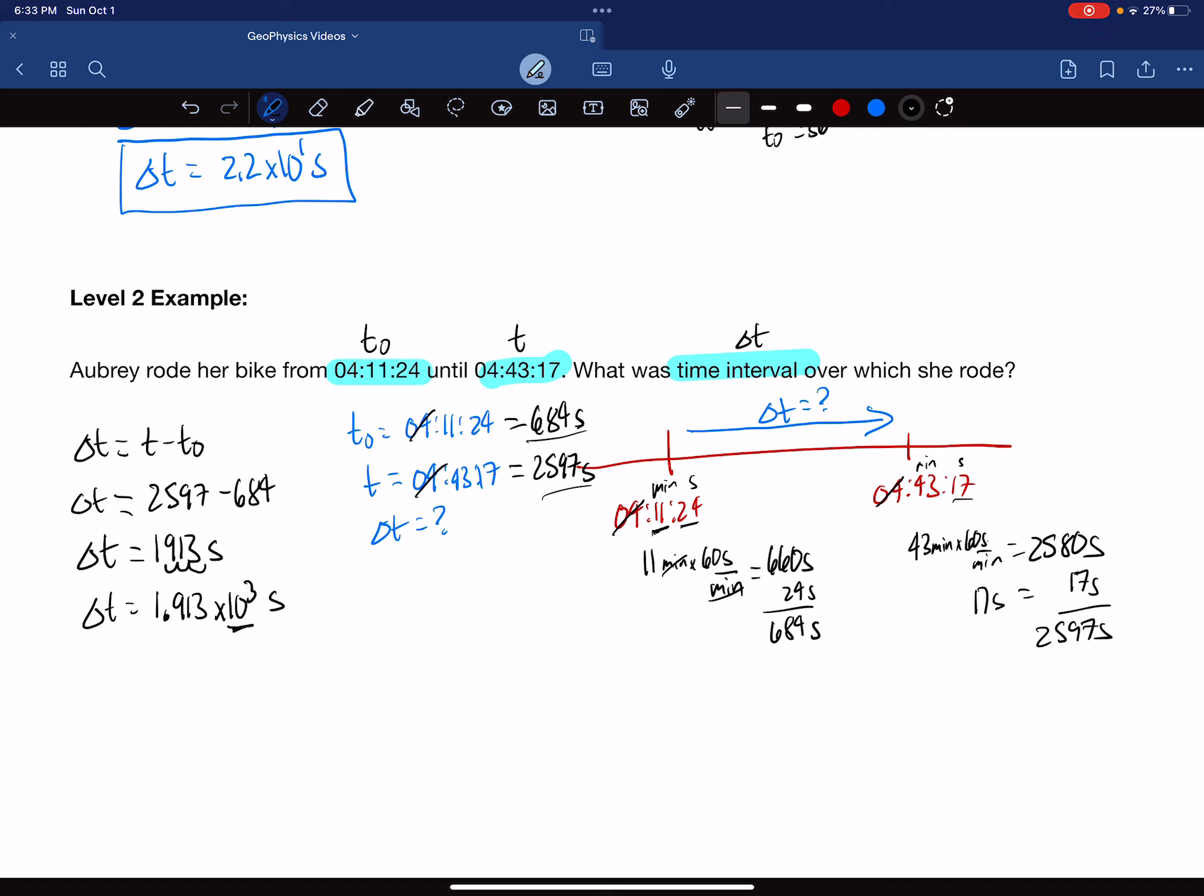You should recognize that 10 to the third is the power of 10 for kilo. So we could write this as 1.913 kiloseconds, probably not a unit you've ever heard before. This is kiloseconds, 1,000 seconds. Now you see why we are putting numbers in scientific notation, because it makes it easy to convert them to metric prefixes.